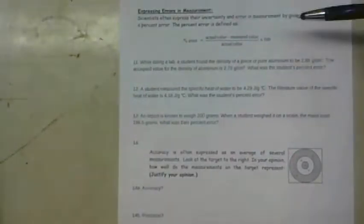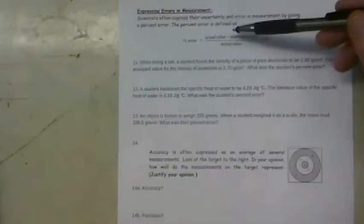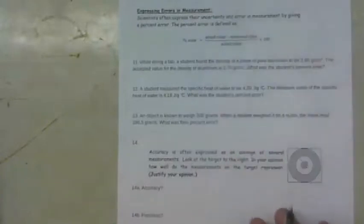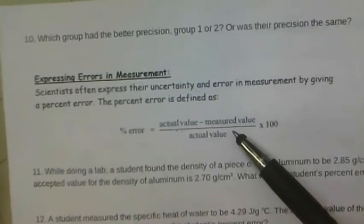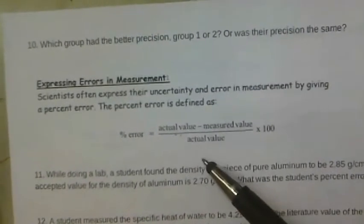The next thing we're going to look at here is expressing errors in measurement. To find the error in measurement, you take what the value should be, the actual value, subtracted from what you measured, and whatever that number is divided by the actual value times 100, and it gives you percent.